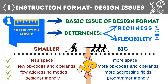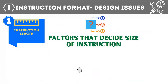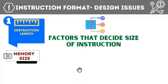There are factors that decide the size of an instruction. The first is memory size: if we need to access a very large memory, we require more bits to address it, so the instruction length should be large. If we have very small memory, we need fewer bits and can use a smaller instruction length.